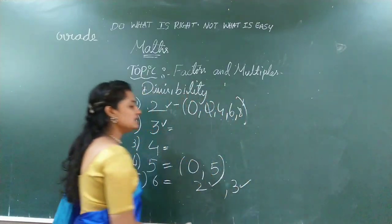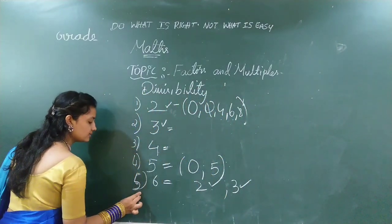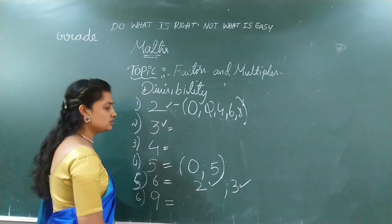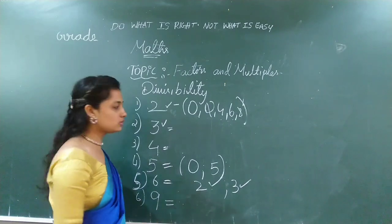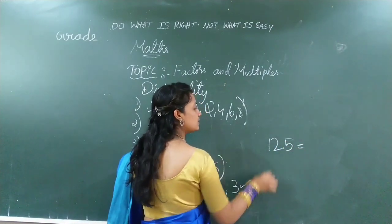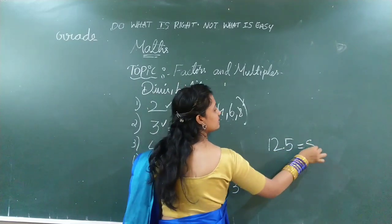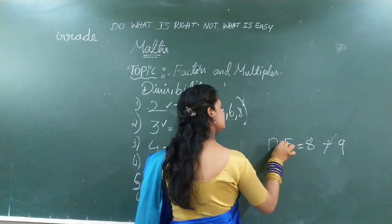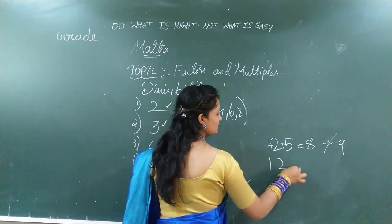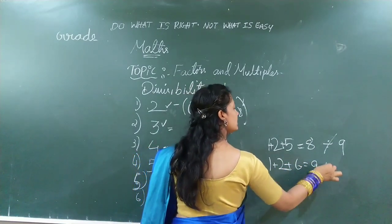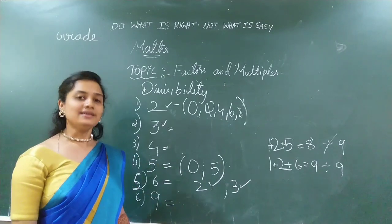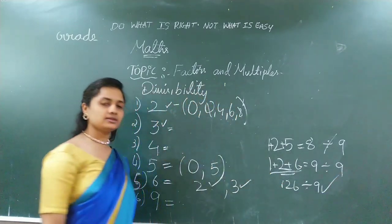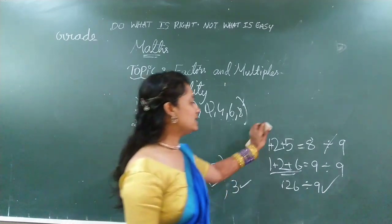Next, we will go to divisibility by 9. For 9, just like the rule for 3, you should add all the digits and check whether the sum is divisible by 9 or not. Let's take an example: 2 + 1 + 5 = 8. Is 8 in the 9 times table? No. So, this number is not divisible by 9. Let's take another example — add all the digits and you get 9. Is 9 divisible by 9? Yes — 9 ones are 9. So, the number 126 is divisible by 9. Just like for 3, add all the digits and check the answer.